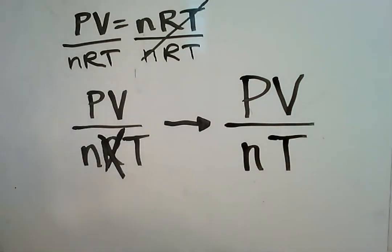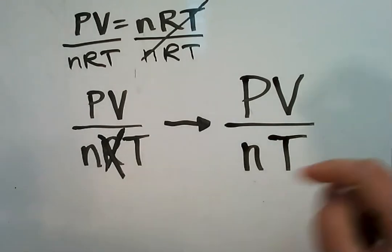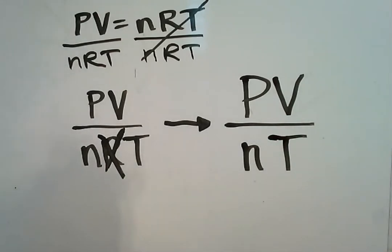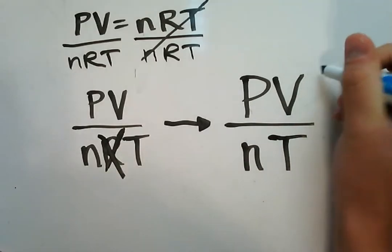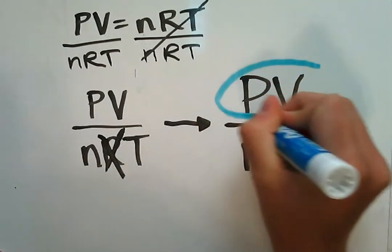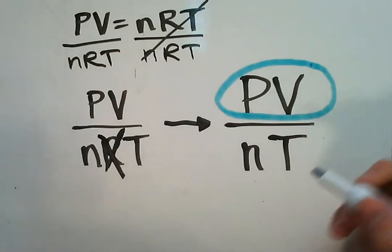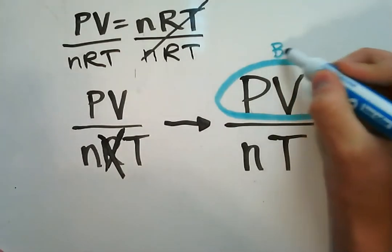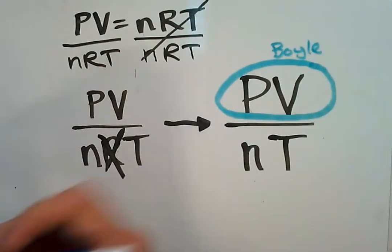Now we can circle all of the individual gas laws in this proportion and we'll have the gas laws in the correct ratios. So first of all, Boyle's law: P times V equals P times V.